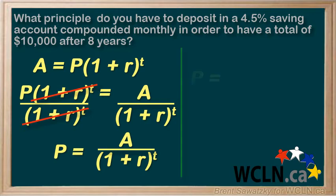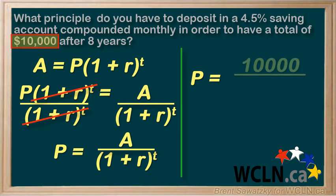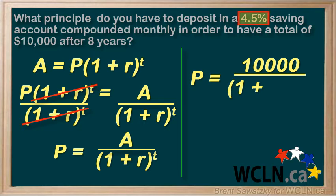Let's plug in some numbers. Our amount is ten thousand dollars, because that's what we want in the end. One plus our interest rate — it's 4.5 percent per year and we are compounding monthly, so we put down 0.045 divided by 12.